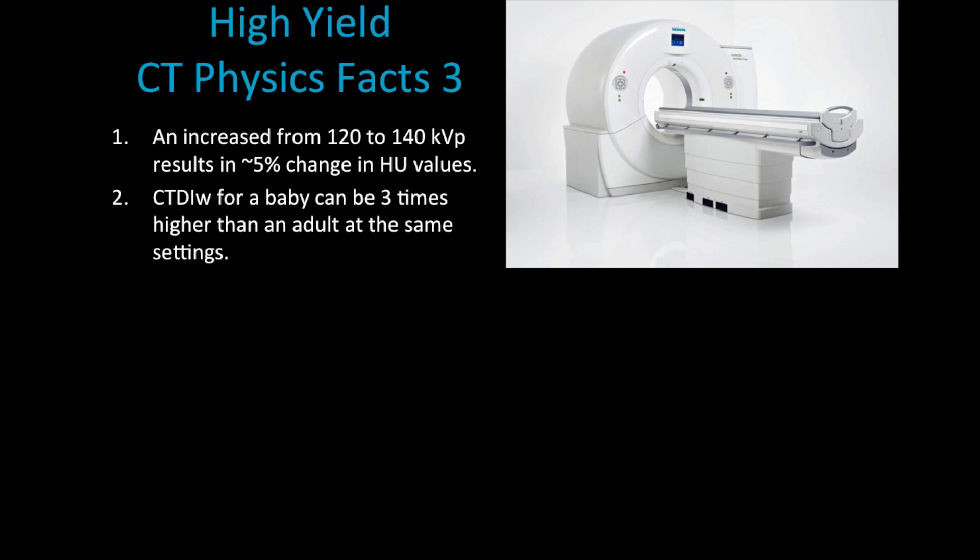The CTDI for a baby is going to be about three times higher than that of an adult. This is a reminder that when we scan a baby or younger patient, we need to make sure that we adjust the settings for that pediatric patient. That way we avoid giving unnecessary radiation dose to this patient, because it will be three times higher if we don't.